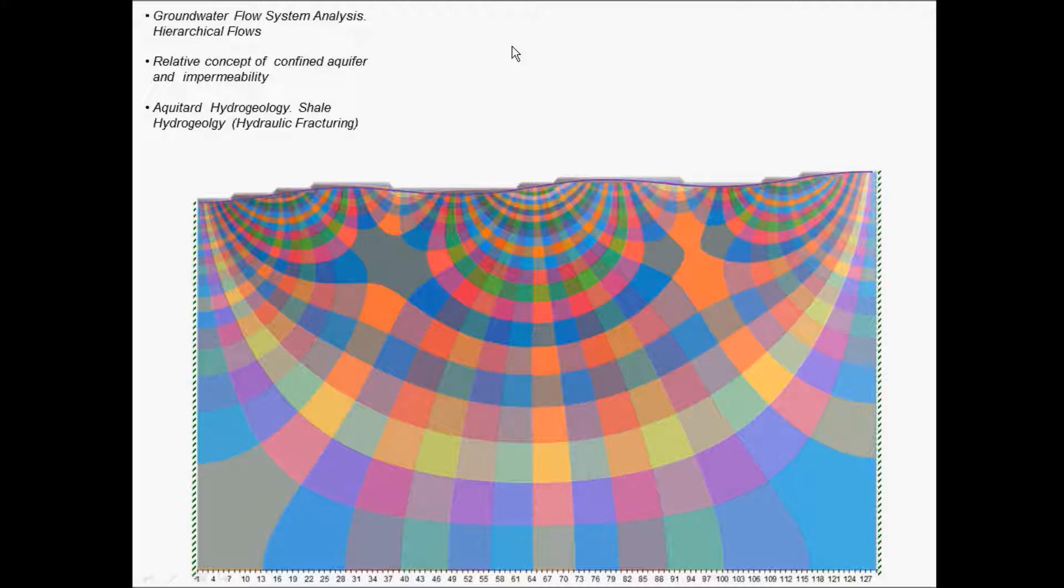Let's follow some of what Joseph Tóth taught with this groundwater flow system analysis. You can find here local, intermediate, and regional recharge and discharge, and some stagnation or quasi-stagnation zones.